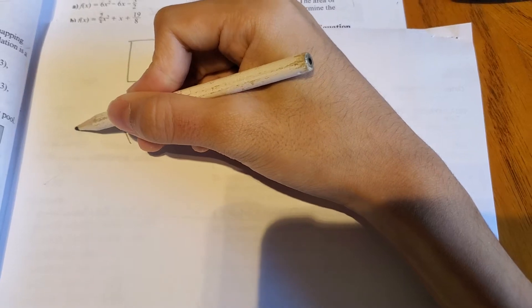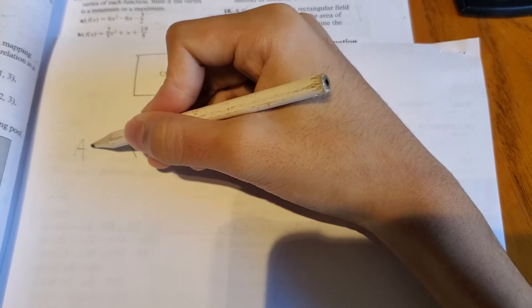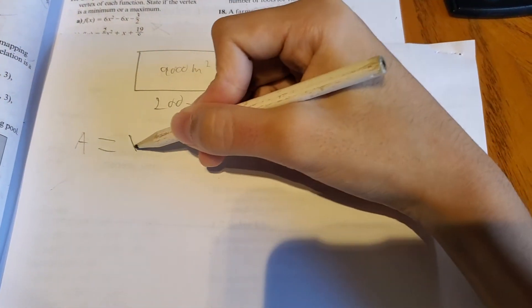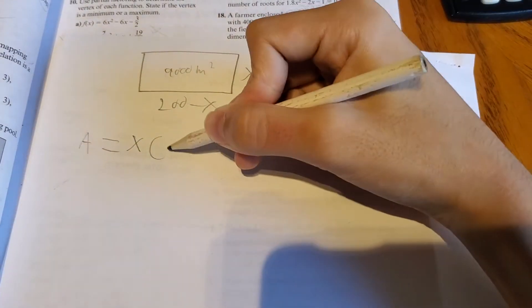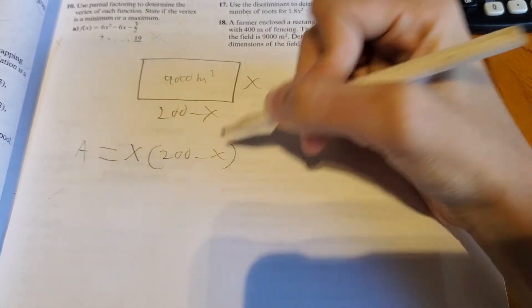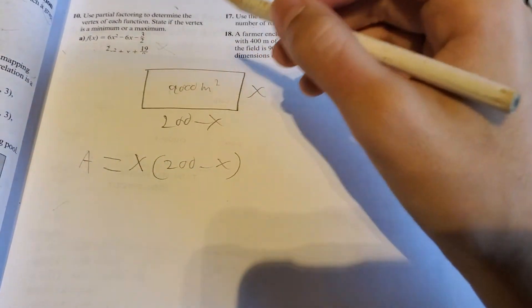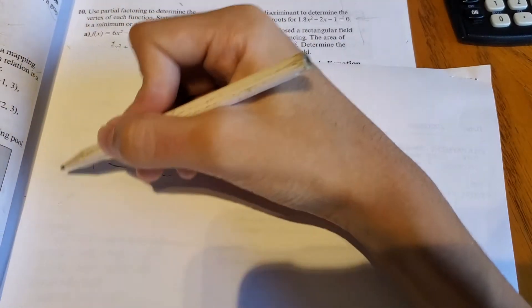So we know that these multiplied together, we get 9,000 meters squared. So let's write that down. So the area is x times 200 minus x, and we can sub in for the area. We know that the area is 9,000 meters squared.